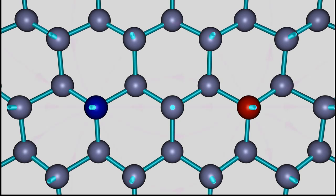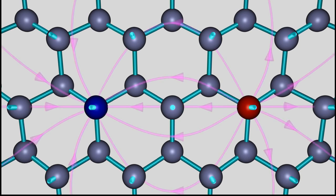An electric field is created by the two ions, painted with magenta colored arrows. Inside of the field, a negatively charged particle is pulled to the N-type region at the right side. Vice versa, a positively charged particle is pulled to the P-type region at the left side. The electric field opposes the diffusion process of electrons and holes between the two regions.